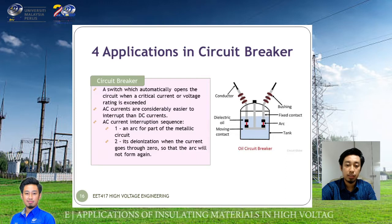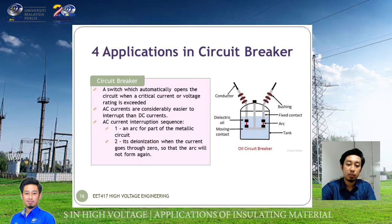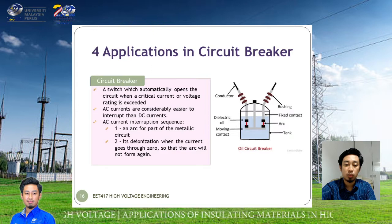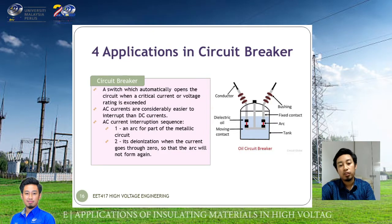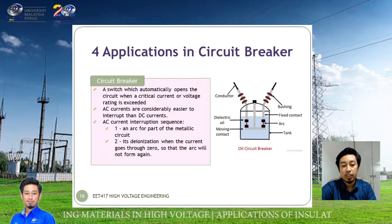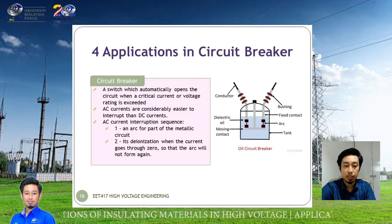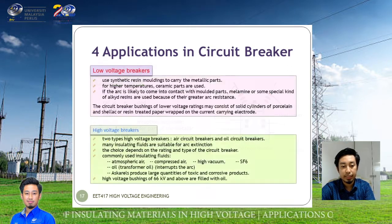DC current is considerably easier to interrupt than AC current. The AC current interruption sequence has two parts: first, the arc forms parts of the metallic circuit, and second, the ionization — when the current goes to zero, the arc will not form again.